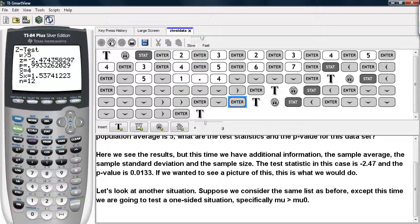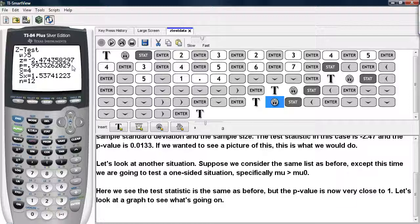And here, notice that the test statistic has not changed, but the p-value is now .9933. This is now very close to 1. The information from the data list also remains unchanged.